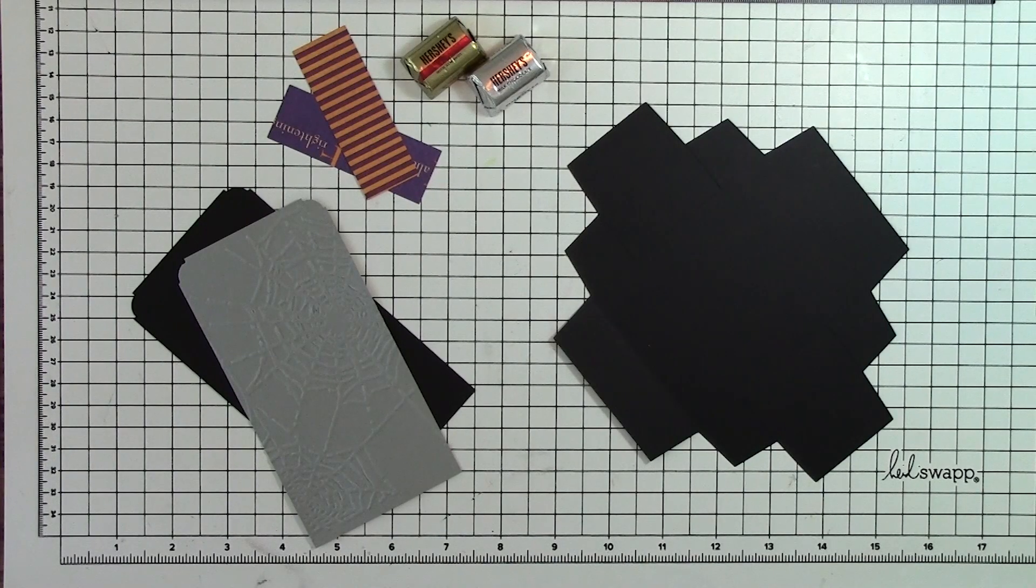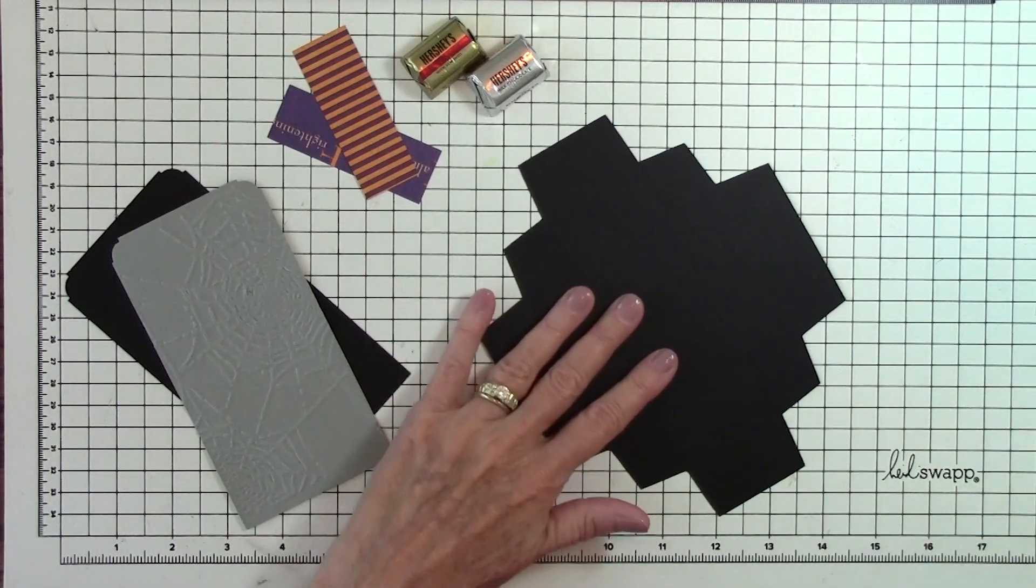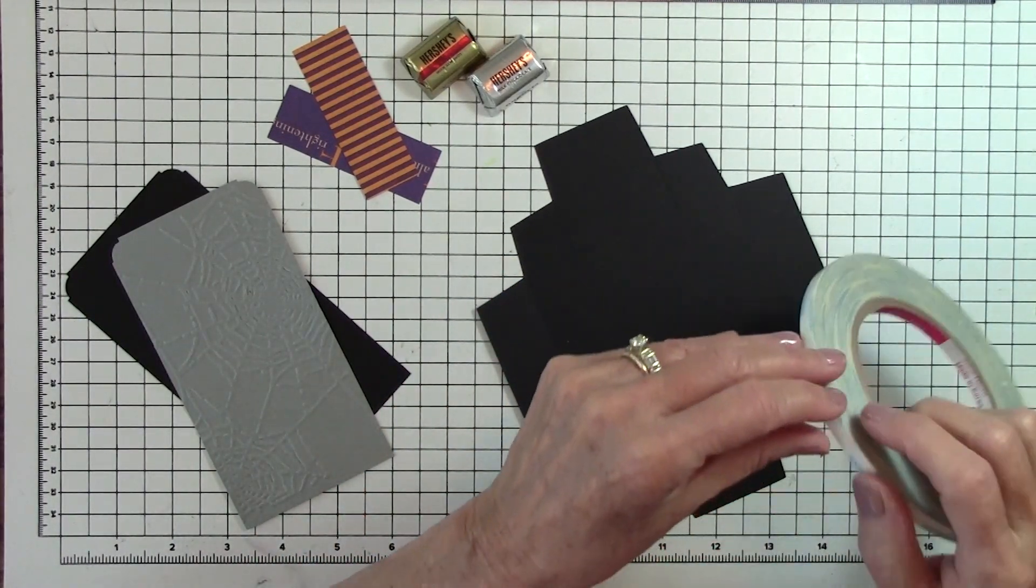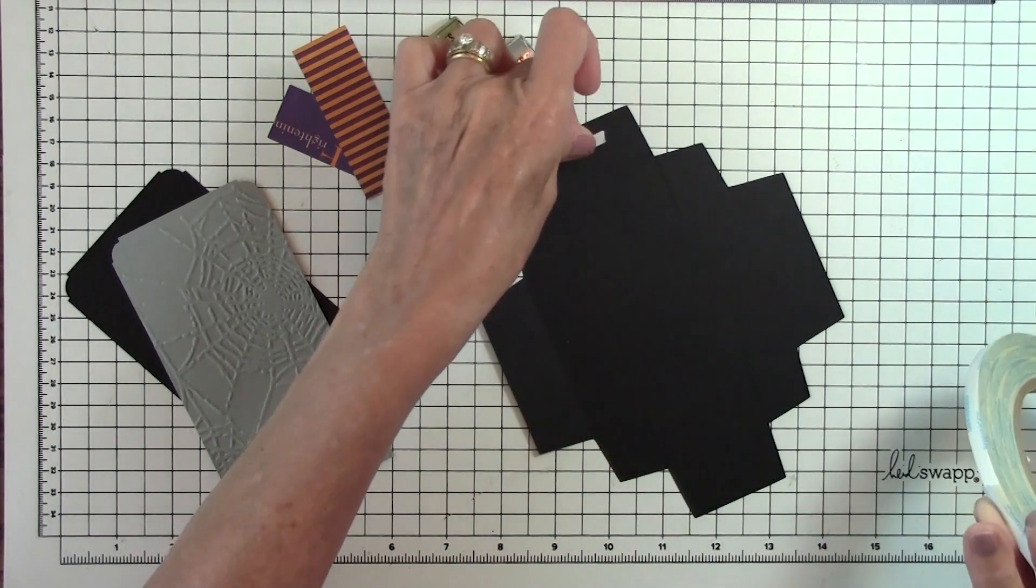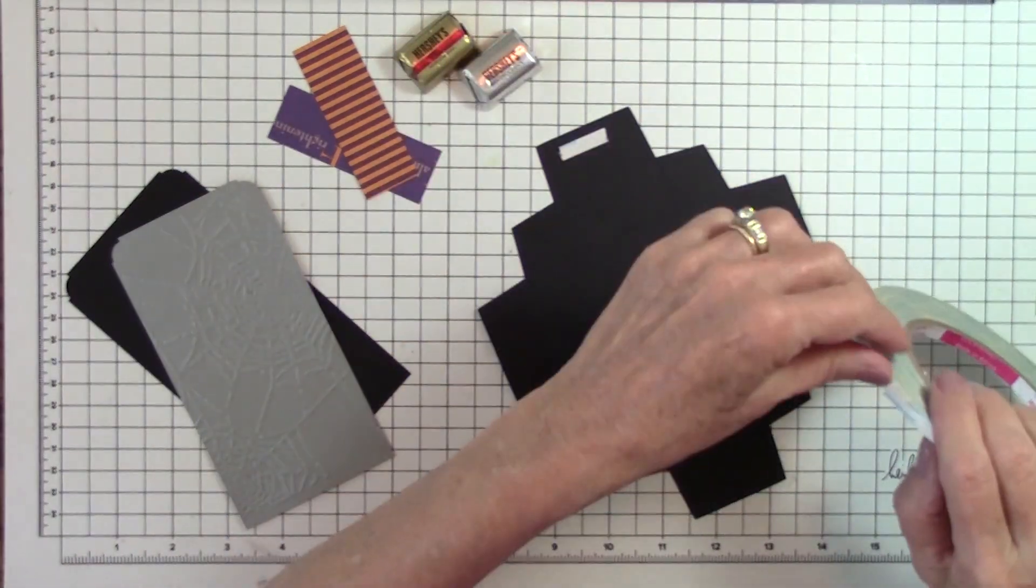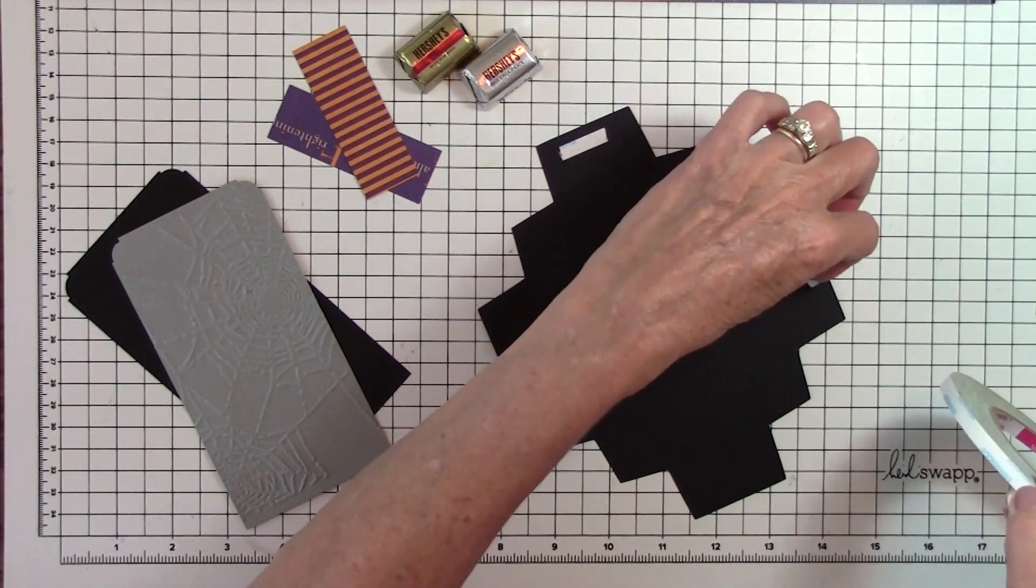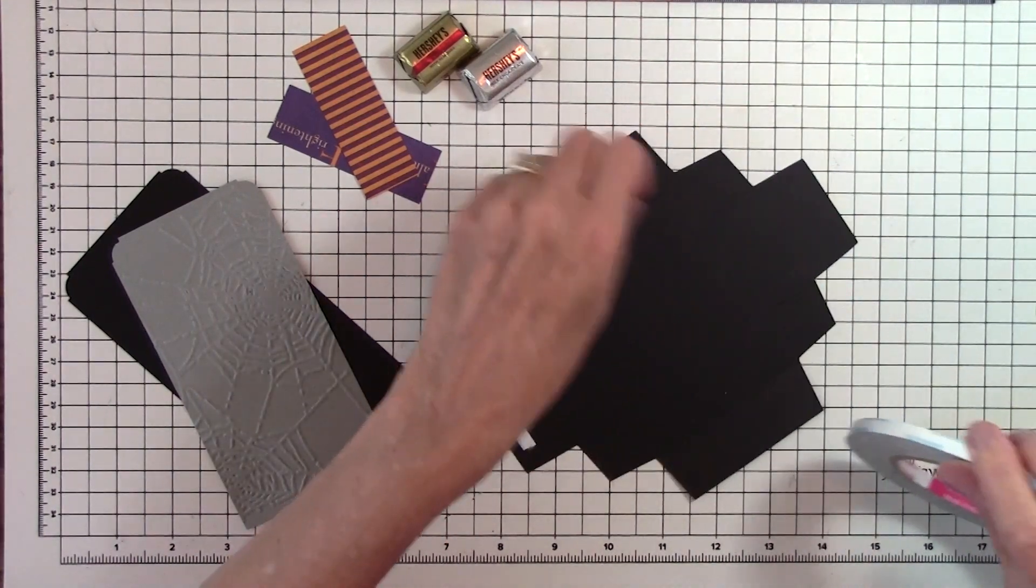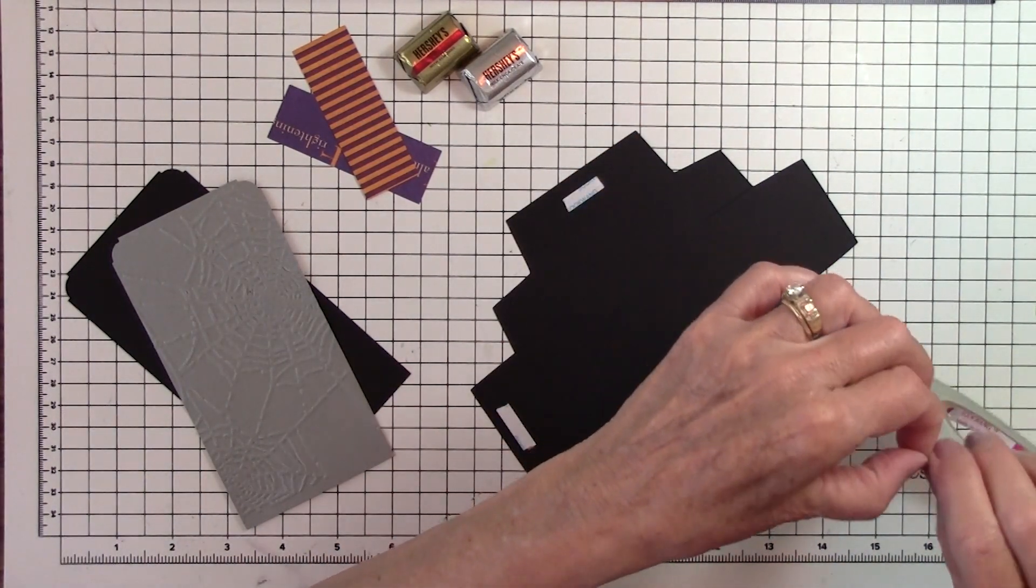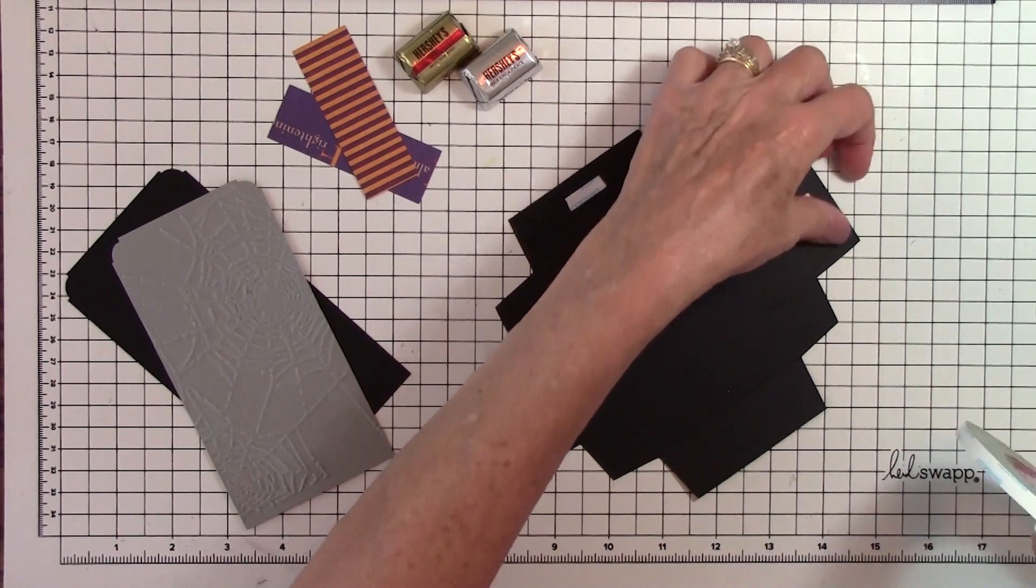To begin our Halloween treat box we're going to start with this black piece and if you take score tape and place on this position. You don't need a lot, just enough that it'll hold it together when we fold it up.